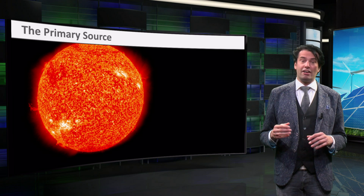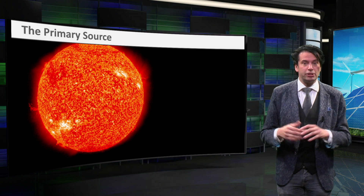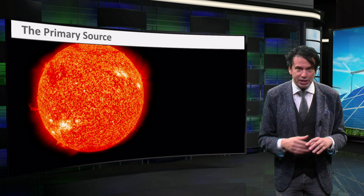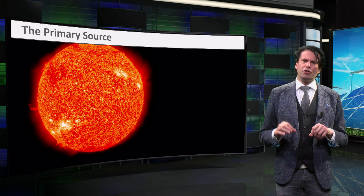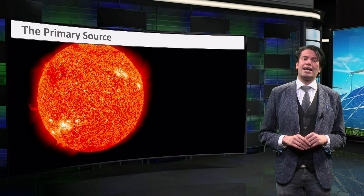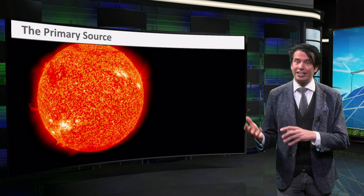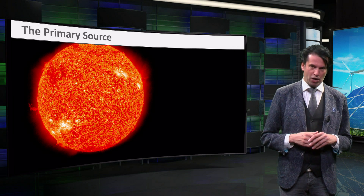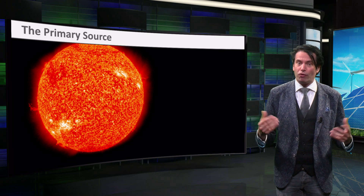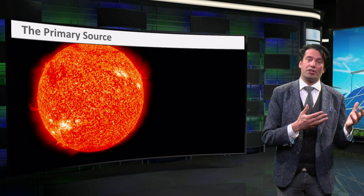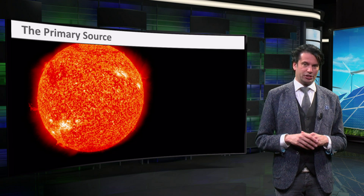Additionally, sunlight evaporates the water that eventually precipitates in a location with a greater height. The resulting water mass at that height has potential energy that can be converted into electricity with hydropower. Finally, plants used for biofuels convert the energy from solar irradiation into chemical energy.